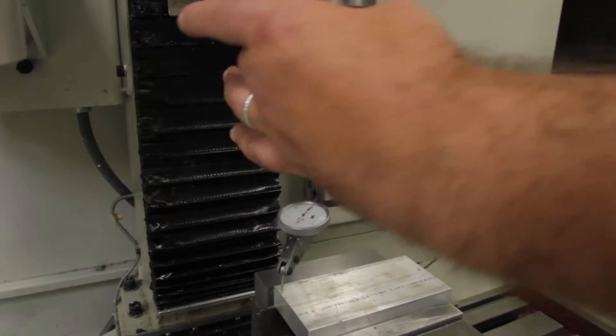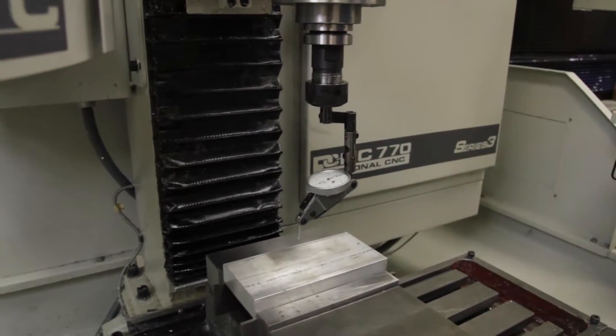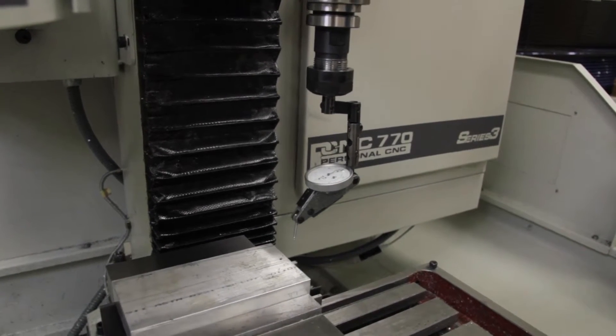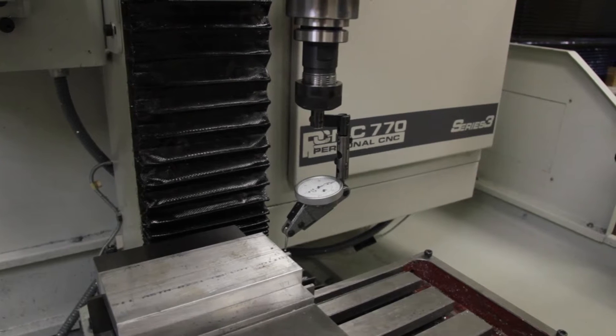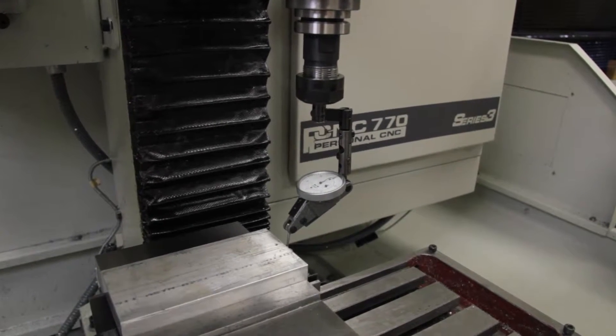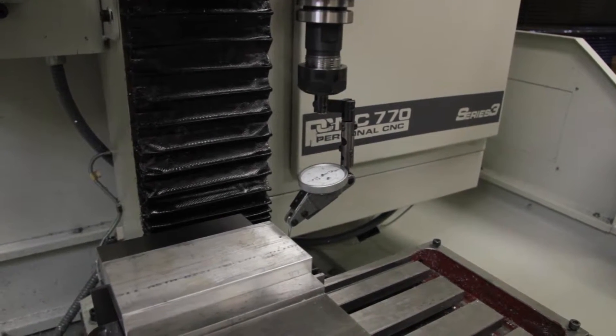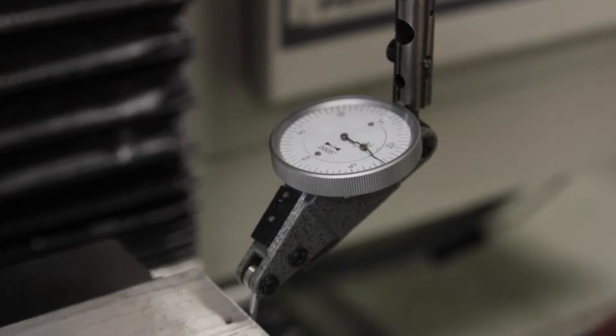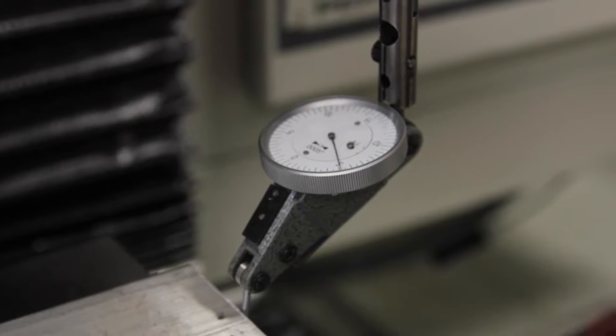Clear the part to the other end of the part, and then move the table until your indicator reads zero.